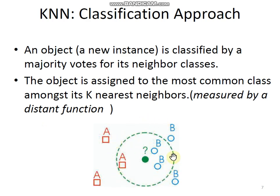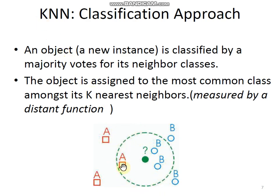Here we took three neighbors, but we can take four or five neighbors — this is decided by the developer. If we take three neighbors it becomes 3-NN (three nearest neighbors). The value of K varies based on the problem statement; that is why it is called KNN. The value of K can be one, two, three, or up to N. This is all about the K-Nearest Neighbor introduction. We will see further details about KNN in the next lecture. Thank you.